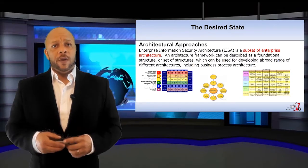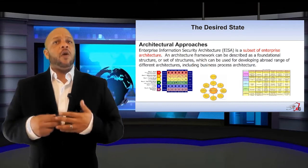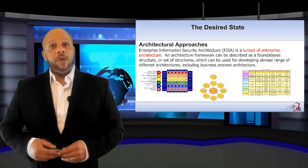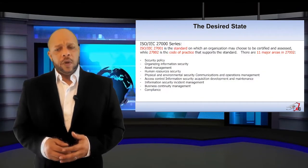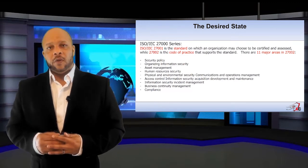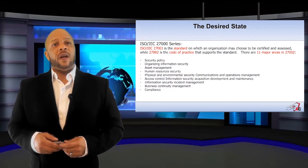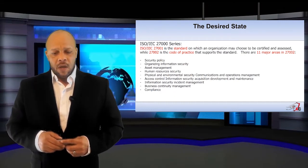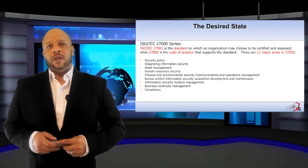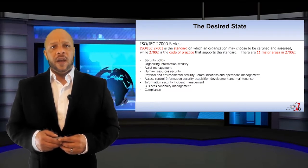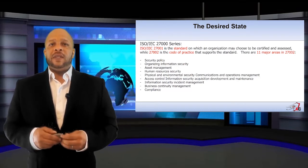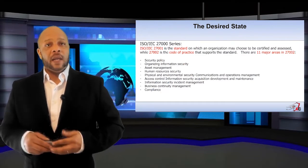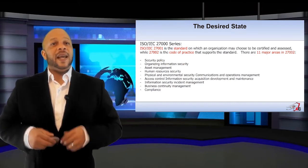Outside of capability and maturity models, there are architectural approaches, which are a subset of the complete enterprise architecture — architectures like SABSA and ZACHMAN. Most organizations have also moved to ISO certification. You should be familiar with ISO 27001, which is the standard, and ISO 27002, which is the code of practice. ISO 27000 has 11 major areas: security policy, organizing information security, asset management, human resource security, physical and environmental security, communications and operations management, access control, information security acquisition development and maintenance, information security incident management, business continuity management, and compliance.